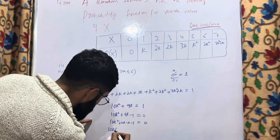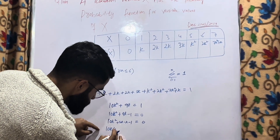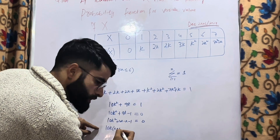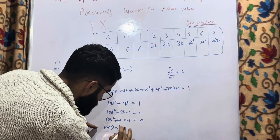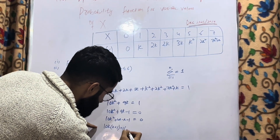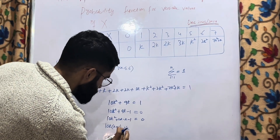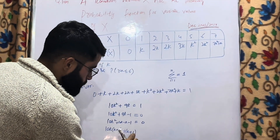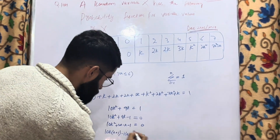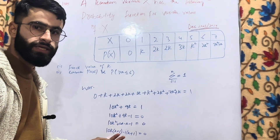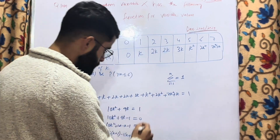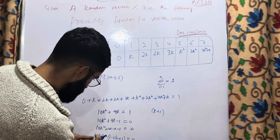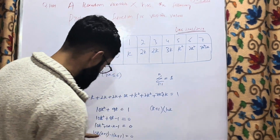Now I take 10k common from the first two terms: 10k(k + 1). Then from the last two terms I take −1 common: −1(k + 1). So we get: 10k(k + 1) − 1(k + 1) = 0. Taking (k + 1) common: (k + 1)(10k − 1) = 0.